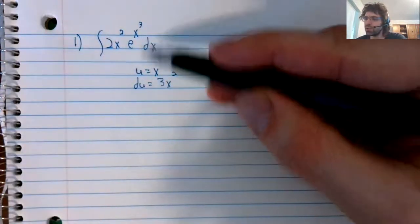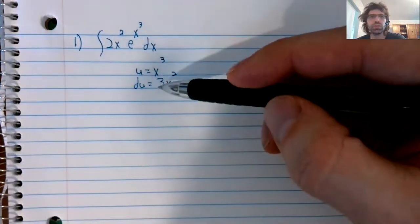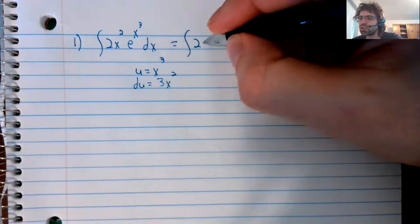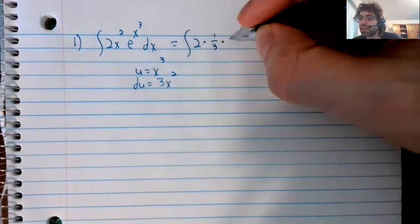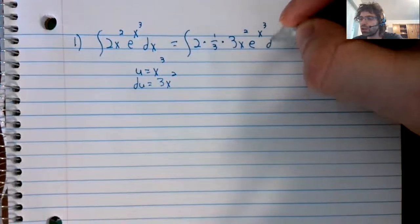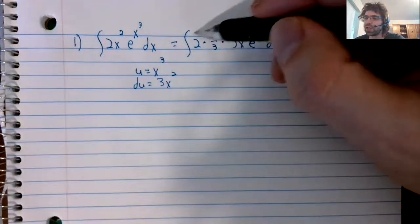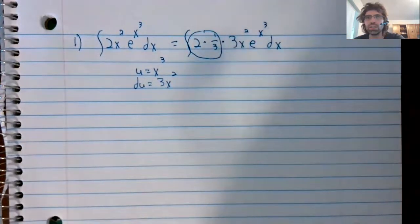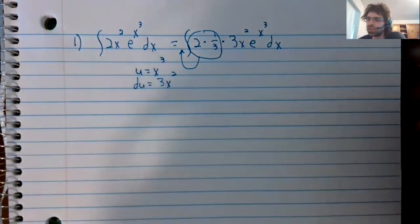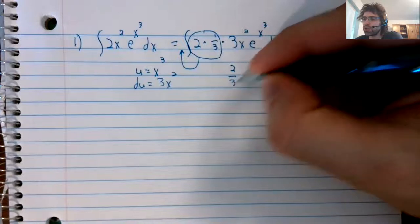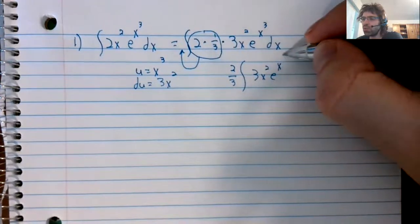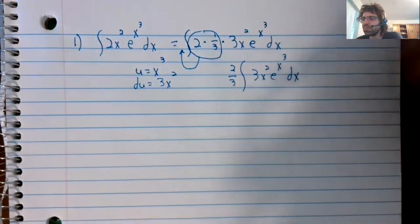If we do our u substitution, we have a two, we need a three. That's fine, we can get a three. We simply throw a one third in there as well. And these terms are not needed for the u substitution. And two and one third are both constants. So we can pull them out of the integral.